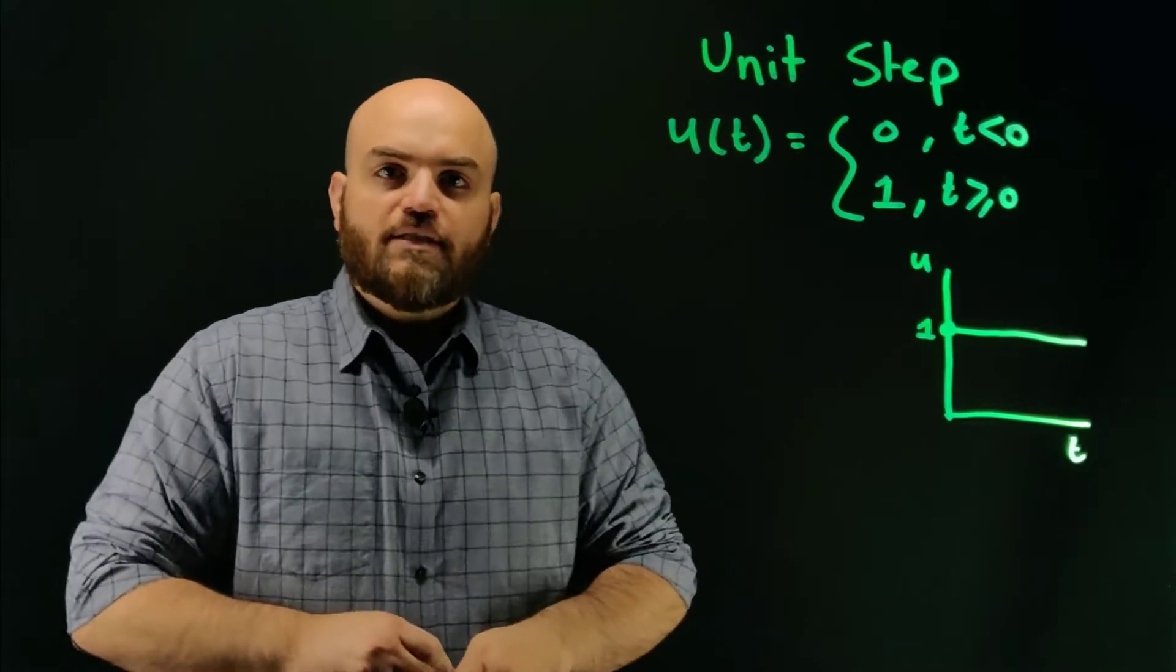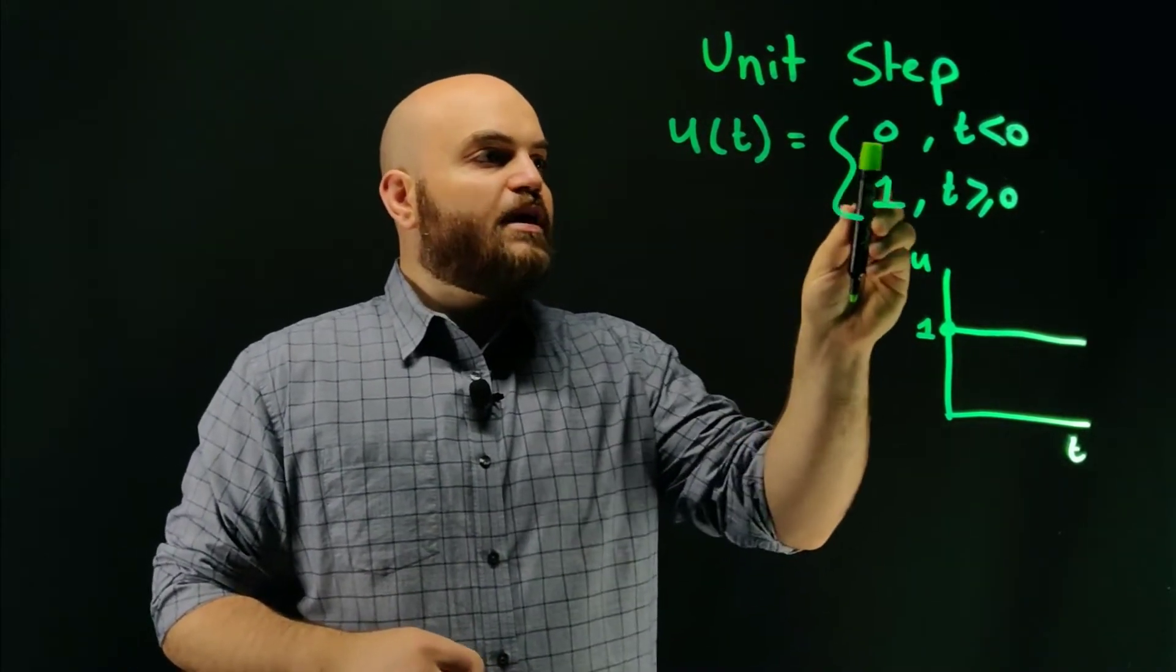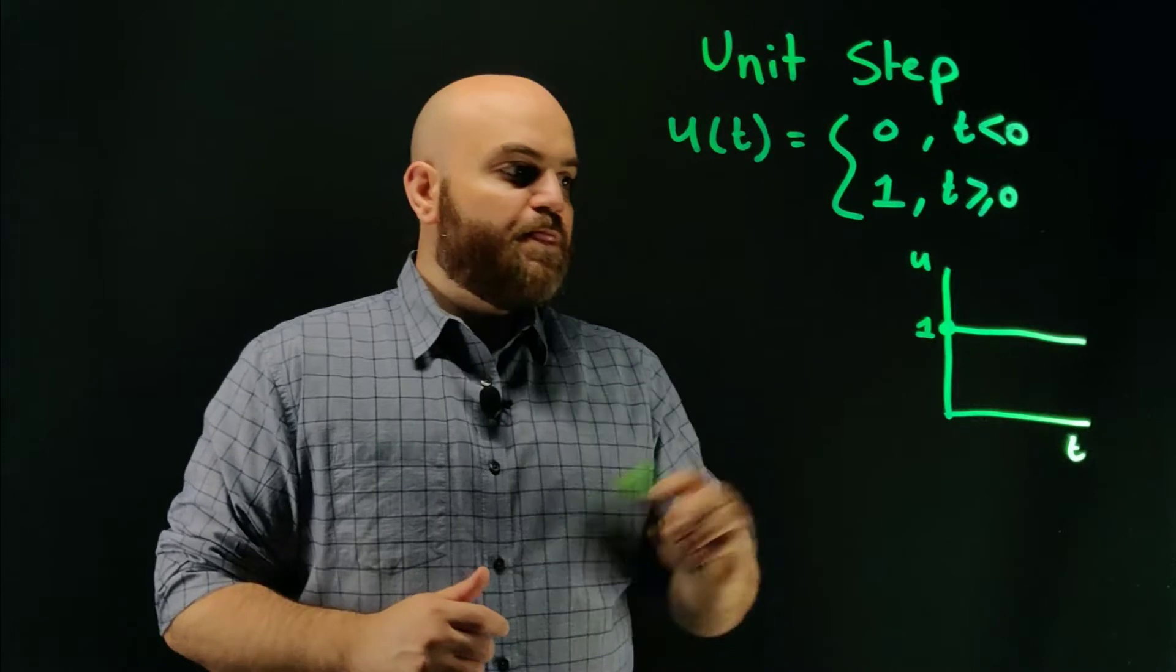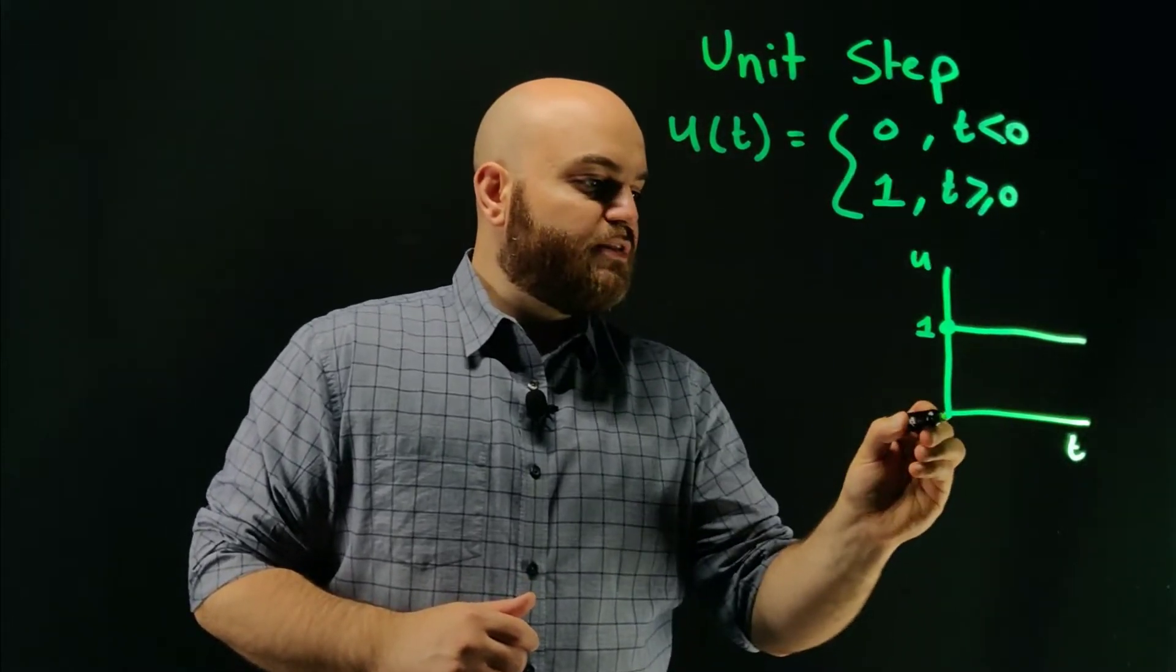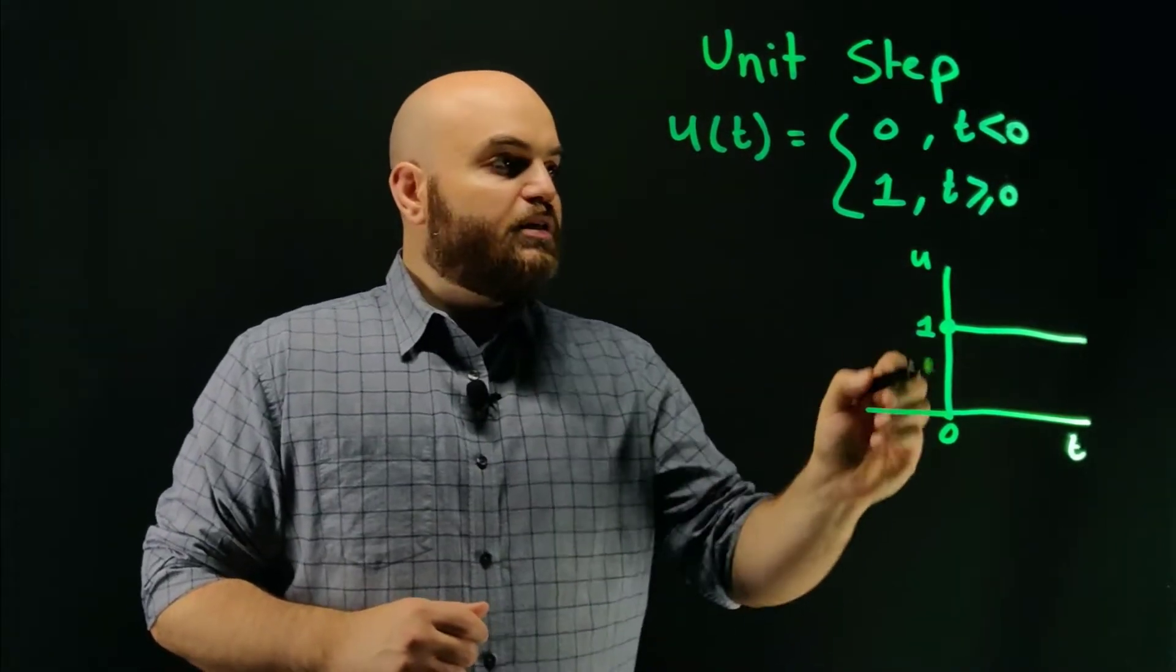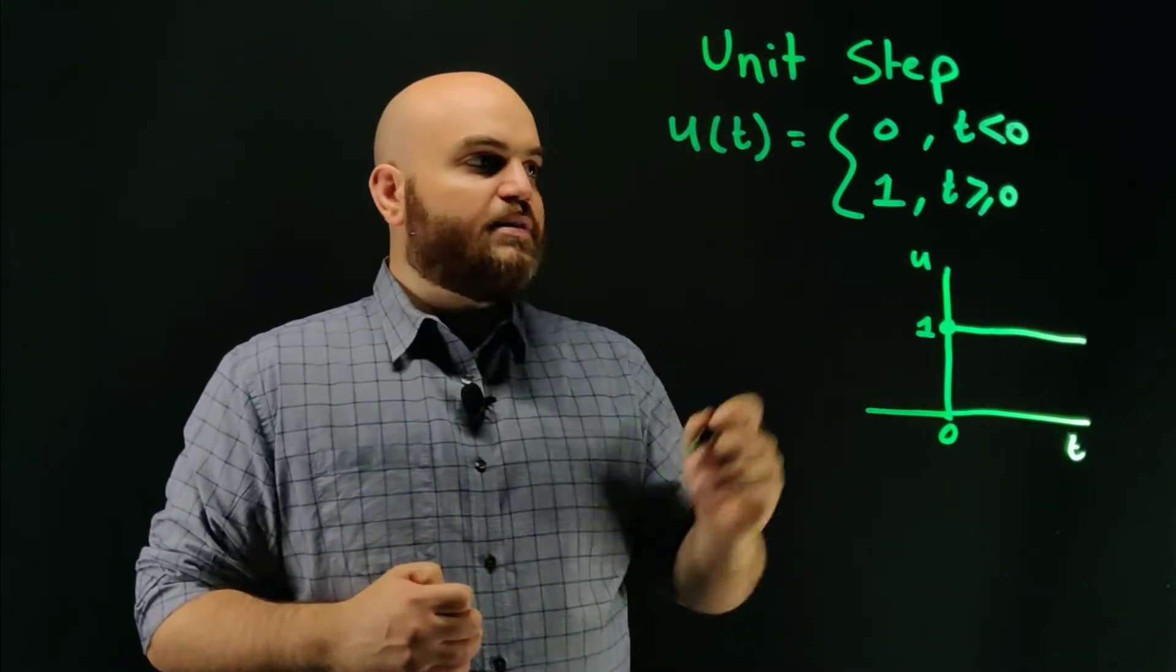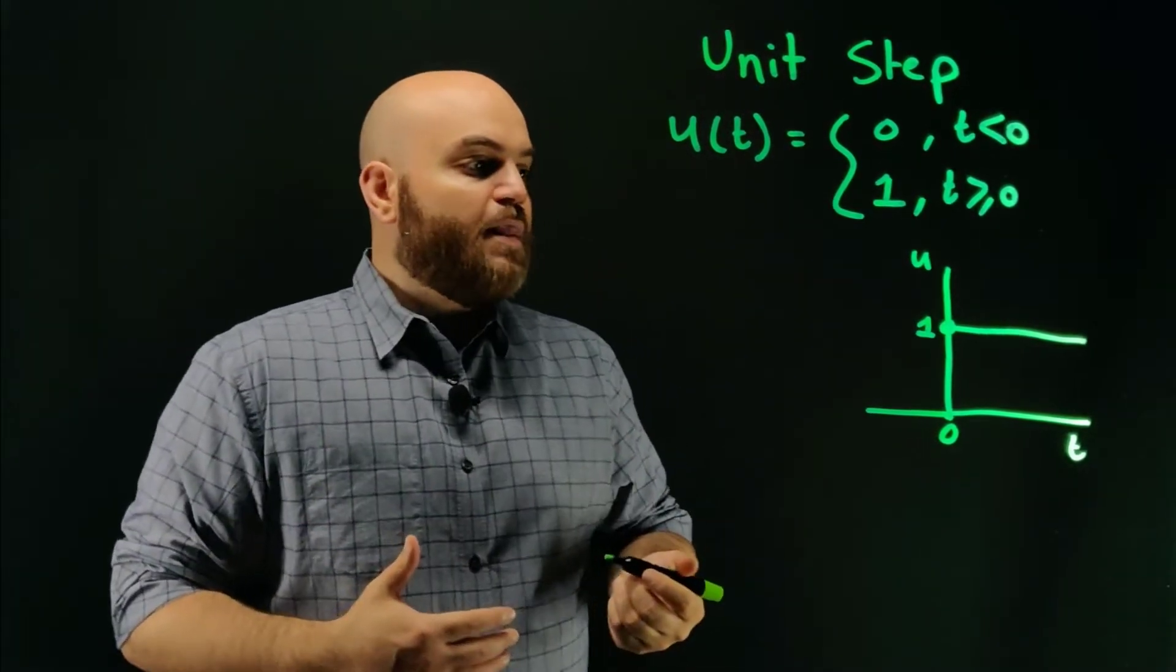So let's start out with the unit step function. A unit step function is a function that has a value of zero before time t equals zero, and then has a value of one at time greater than zero. And this is kind of what it looks like, see it has a value of one as time is greater than zero, this is t zero, and then before that it has a value of zero. And I use the switch time here as zero, it doesn't need to really be like that, I only did that to simplify the drawing here for myself, it could be really any time that you pick for your system.